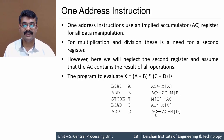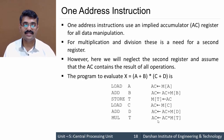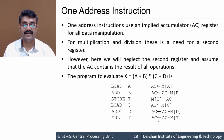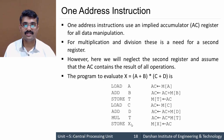Then ADD d gives AC ← AC + M[d], so the accumulator now contains c + d. To multiply, we write MUL t — AC contains c + d and a + b is stored at t — so AC ← AC × M[t]. The result is in the accumulator, so we write STORE x to store the content of the accumulator at address x. This is how one address instruction is implemented.